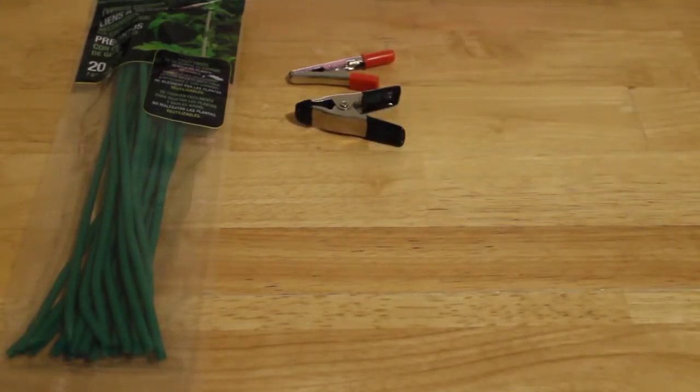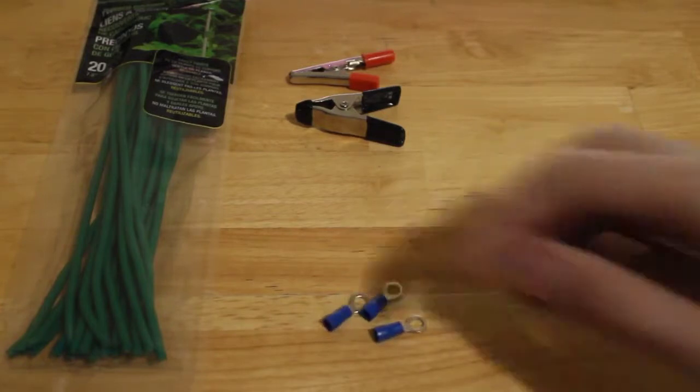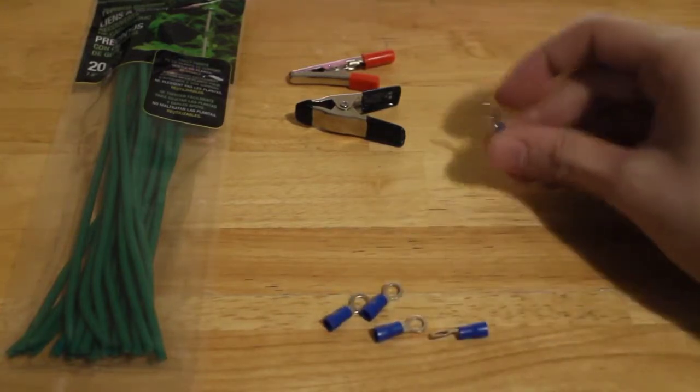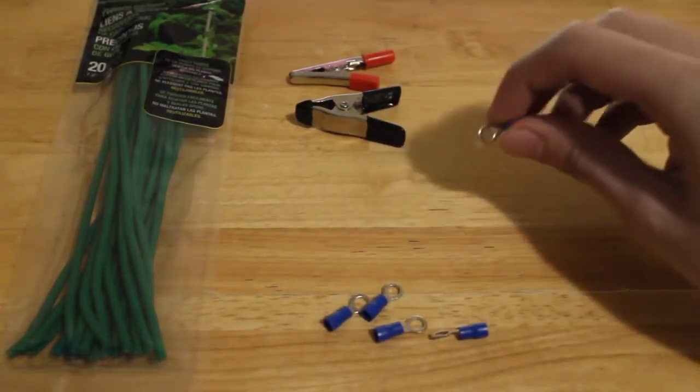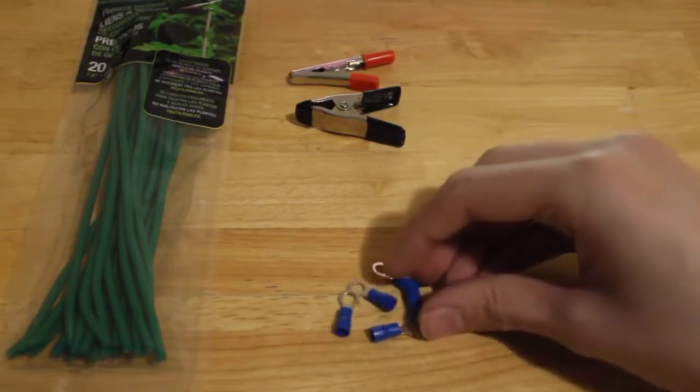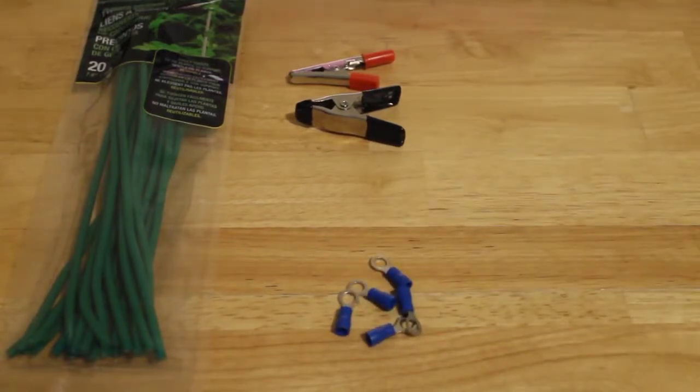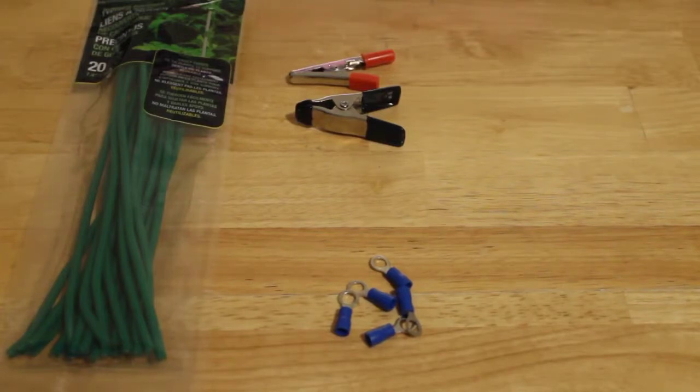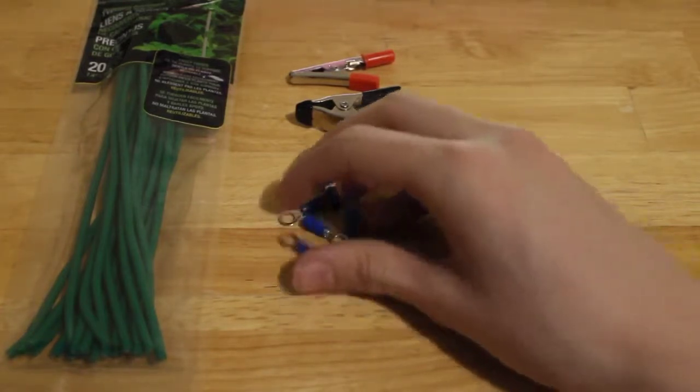And another thing you're going to need are some crimp connections, now these are the ones with the holes so we can attach the twist ties to the alligator clips. And the last thing you're going to need which I don't have right here at the moment is a small piece of MDF and that's going to be our base for the third hand.